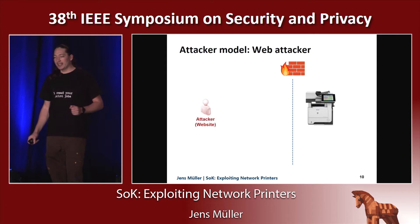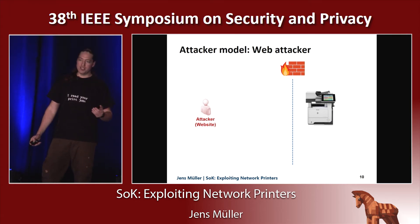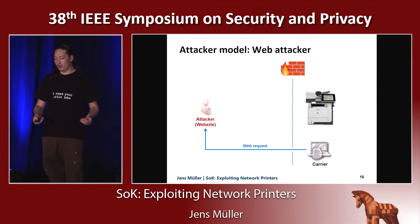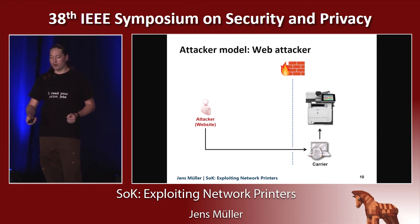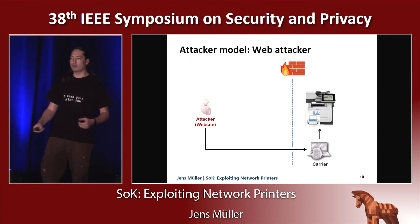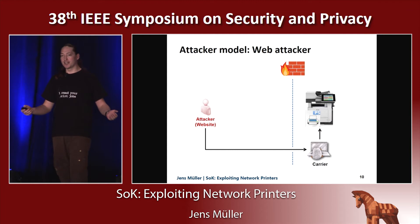Our weakest attacker model is the web attacker. All she does is control the contents of a website and somehow lure an employee within the same local area network as a printer to her website. She's able to execute JavaScript in the employee's web browser and trigger HTTP POST requests to port 9100 of a network printer, and therefore send PostScript files and execute PostScript code on the printer. So the web attacker is able to perform all the attacks to follow — in other words, a malicious website can read your print jobs.